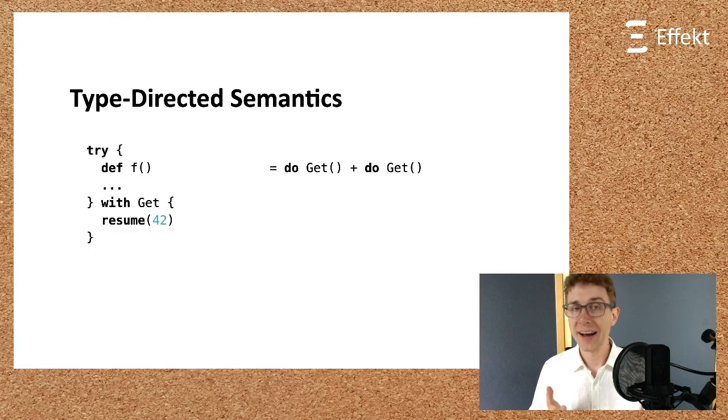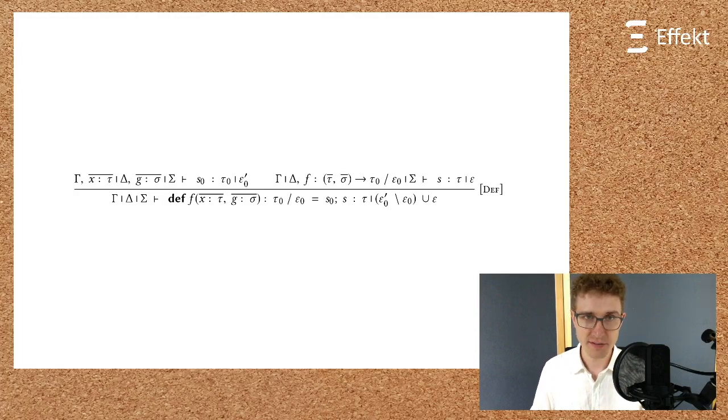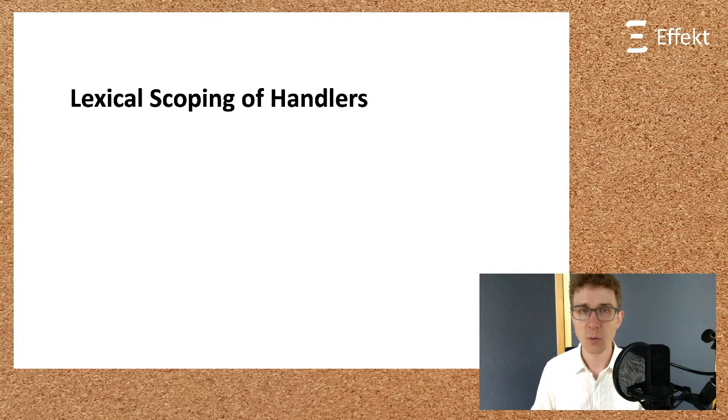In our example, by annotating the effects on a block, the user can choose whether an effect should be handled at the call side of the block, or whether it should be handled at the definition side of the block. The different annotations not only affect the typing, but also the operational semantics, as we will see. But first, let us review our typing judgments for blocks. In our typing judgment for def, we can see exactly this. Some effects, epsilon_0, are annotated on the function f, and thus need to be handled at the call side of f. All other implementation effects, epsilon_0 prime, without epsilon_0, have to be handled at the definition side of our block f.